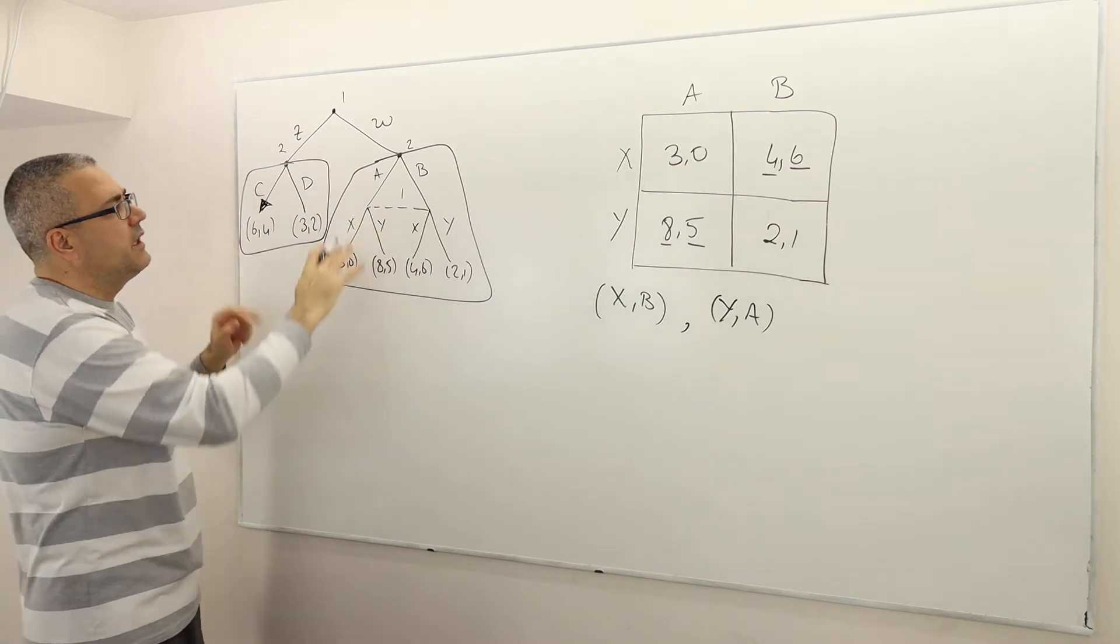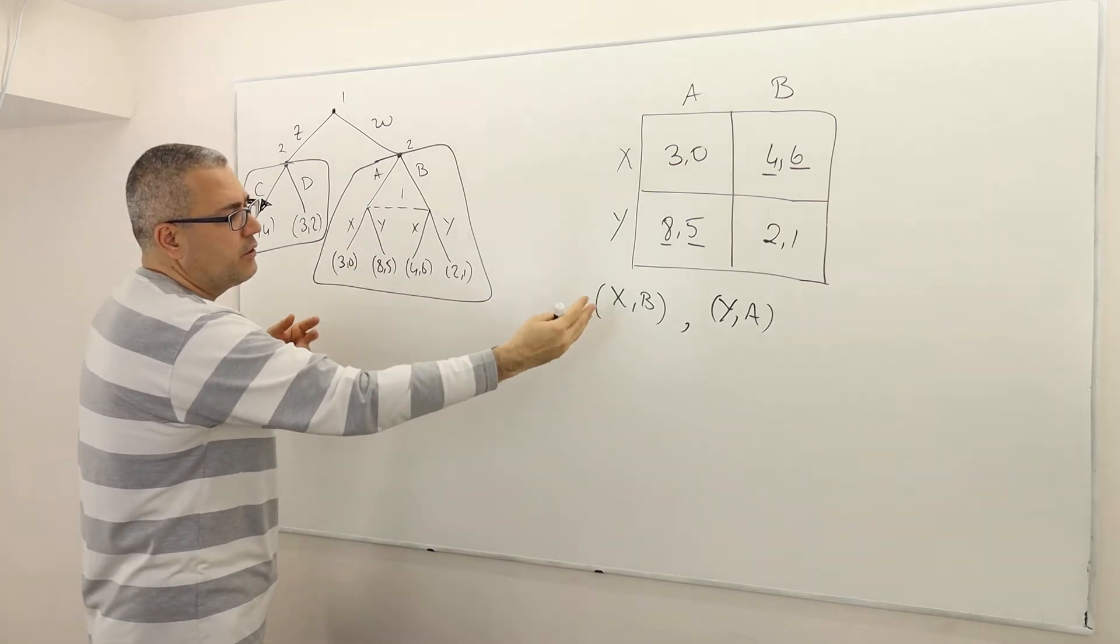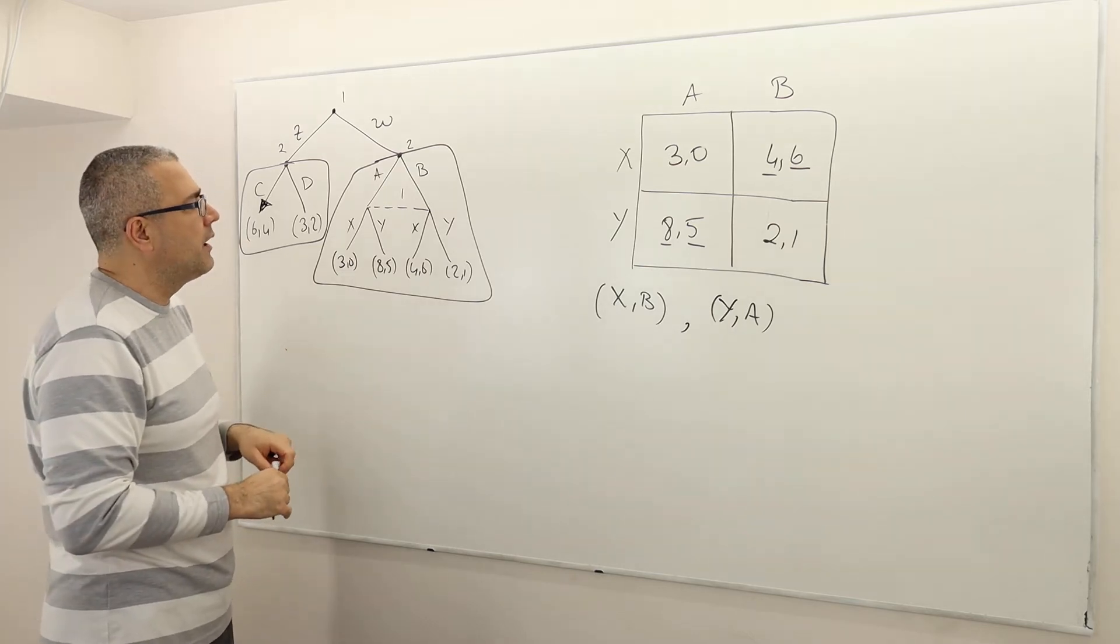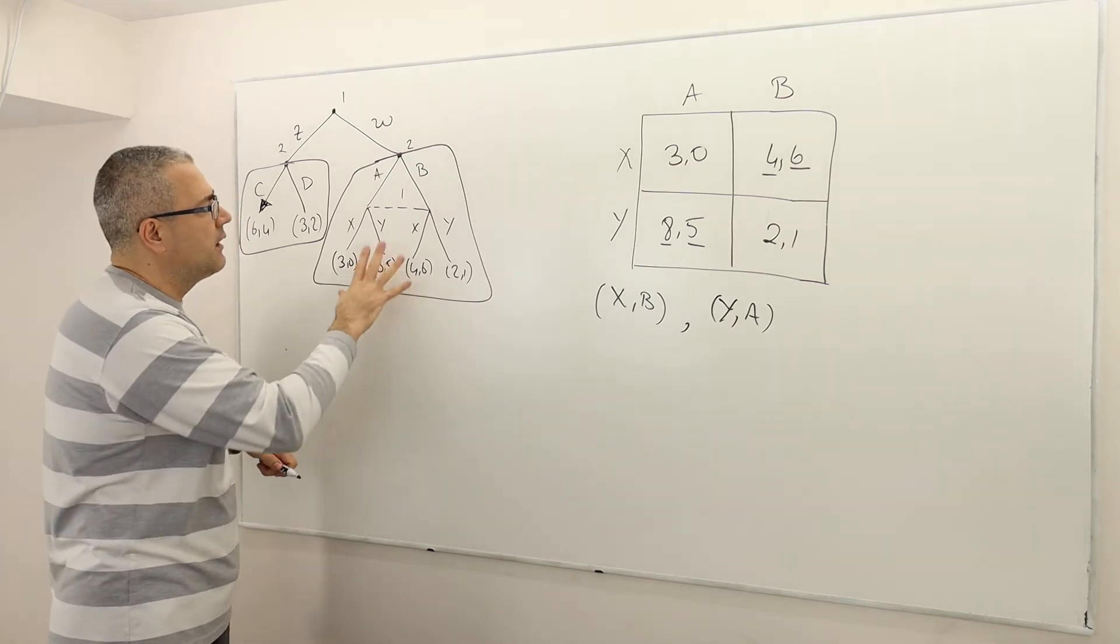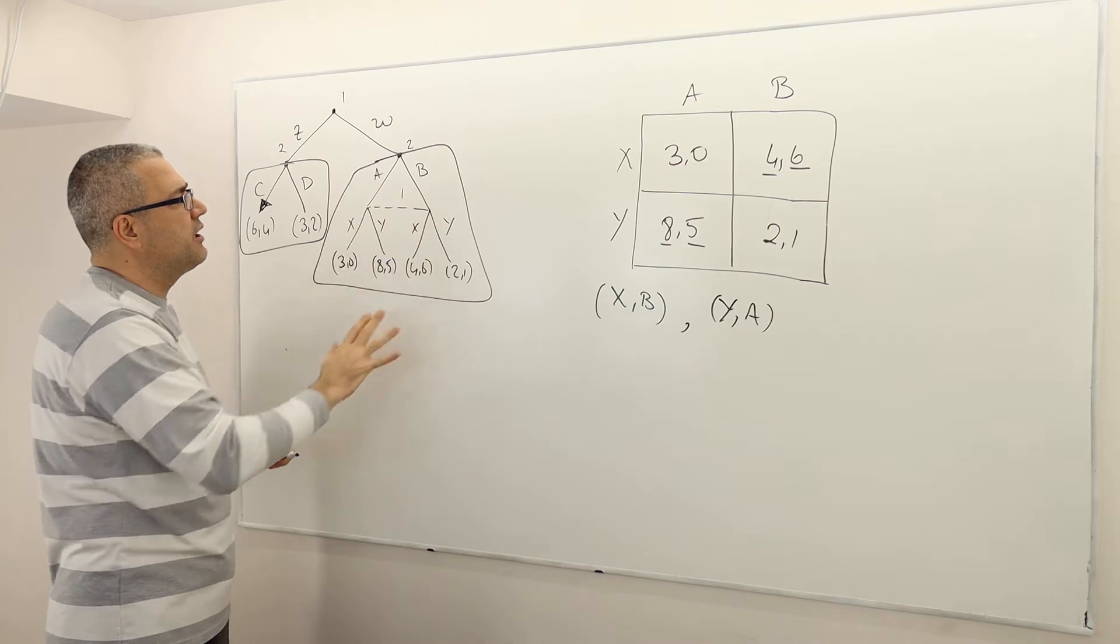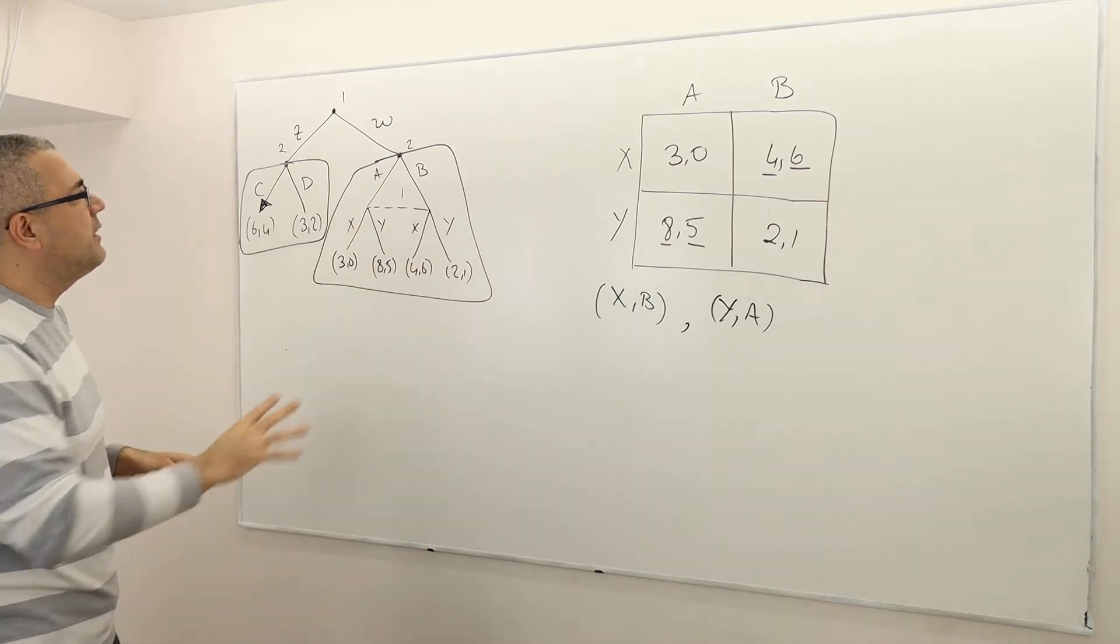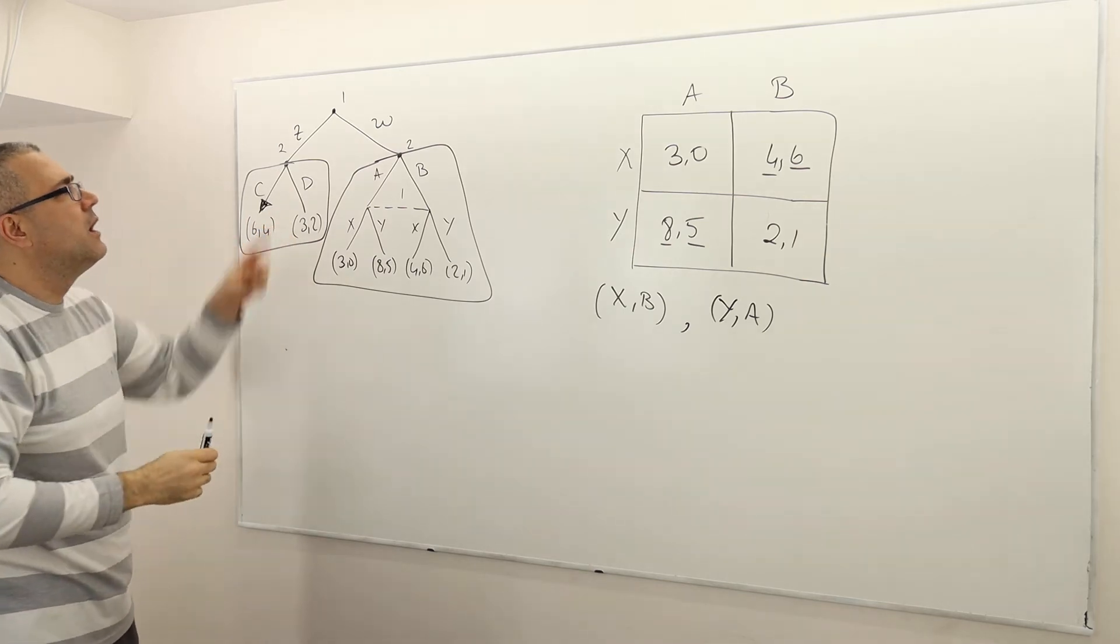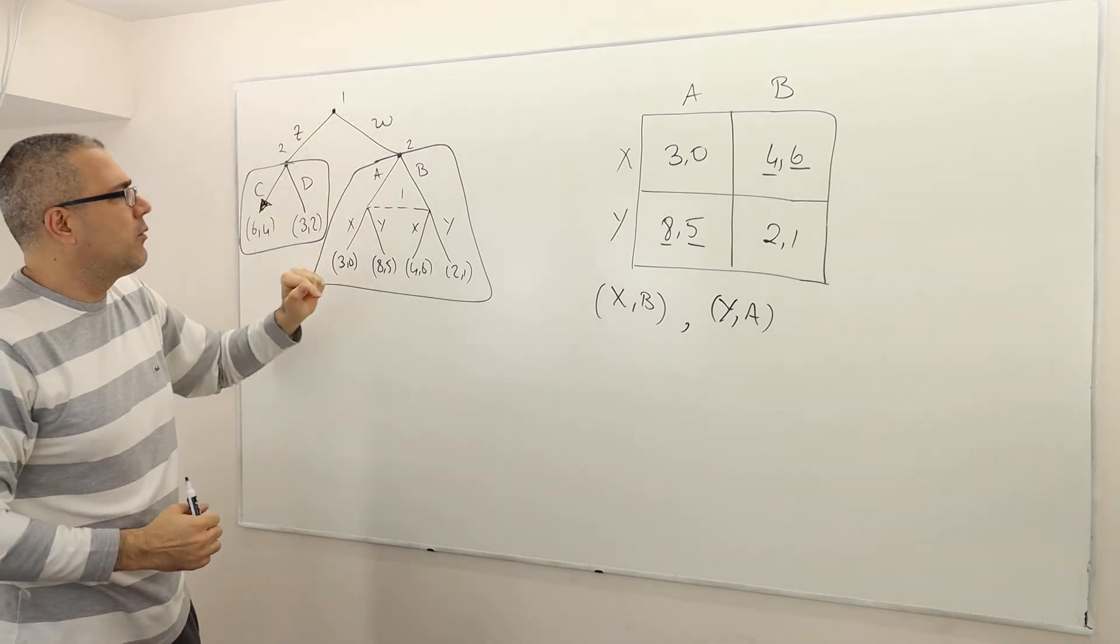Alright, so here C, here, well don't forget there are two, X,B and Y,A. So for that reason, I am not putting any sort of branch here. But what does that mean? That means if player 1 moves Z, he knows that his outcome is going to be 6,4. When he moves to W, however,